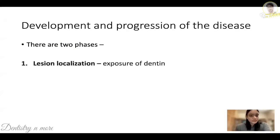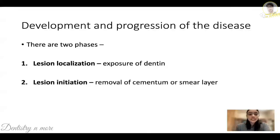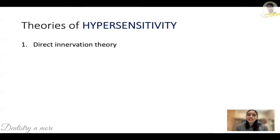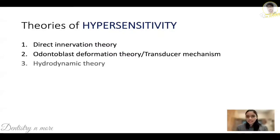There are two phases in the progression of this disease. The first is lesion localization, where there is initial loss of dentin, and then there is lesion initiation, where there is removal of cementum or the smear layer. Coming to the most important aspect of this topic — the theories of hypersensitivity — three theories have been proposed to explain the mechanism of why hypersensitivity occurs, of which two have been disproved and only one is accepted today.